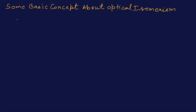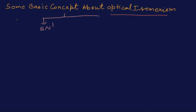Hello students. Today we are again gathering and we are going to discuss about the optical isomerism, which is a burning topic of the haloalkane and haloarenes. We have to discuss what is optical isomerism. This concept we are using in two reactions: the SN1 reaction and the SN2 reaction.